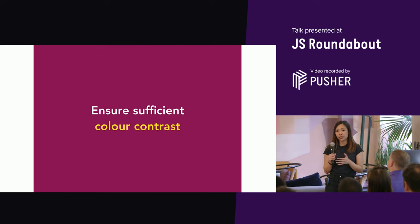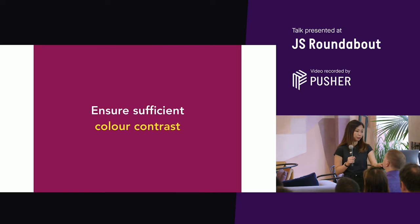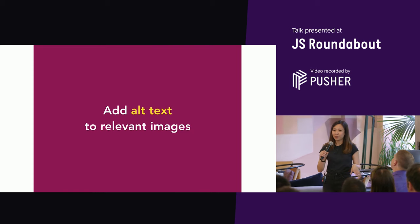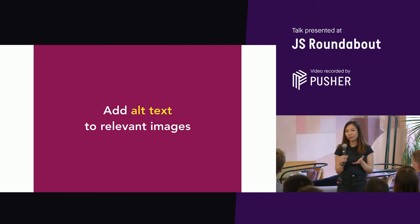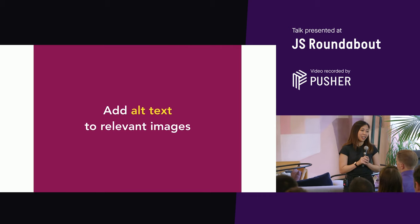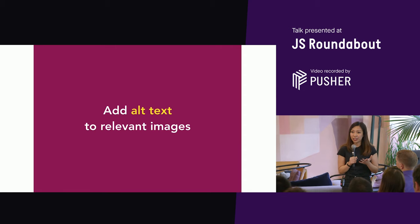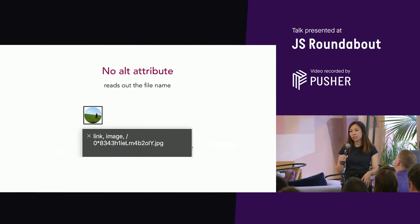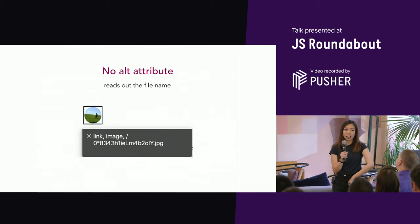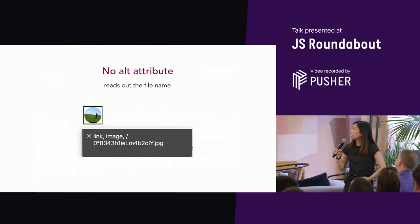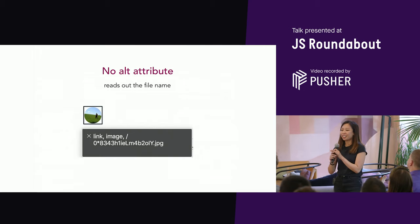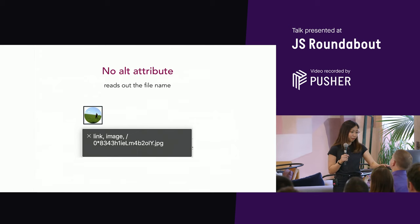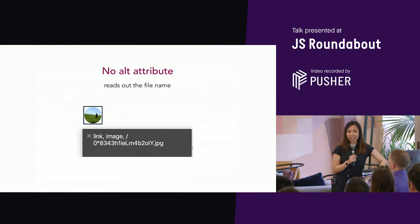I'll come back to color contrast when I get to the slide about tools. Alt text is probably everyone's favorite accessibility feature — if someone asks you about an accessibility thing you could do, it's probably the first thing you'd think of. But it's also easy to get wrong. If you don't give an alt attribute, the screen reader will read out the filename, every character, and you can imagine how annoying that's going to be.